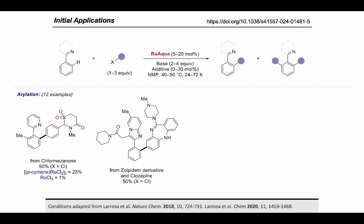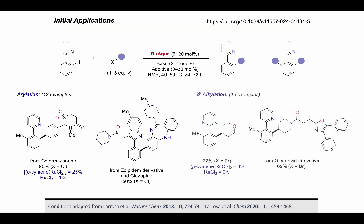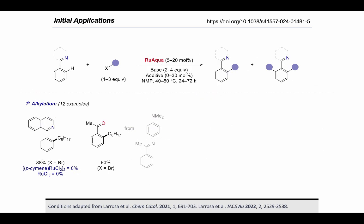We then began targeting more challenging ortho functionalizations, including the secondary alkylation of such directing groups. We have 10 successful examples of this with promising yield, and were once again able to extend this to more challenging substrates such as the oxoprosin derivative shown here. We then took this one step further and targeted the primary alkylation of these motifs.